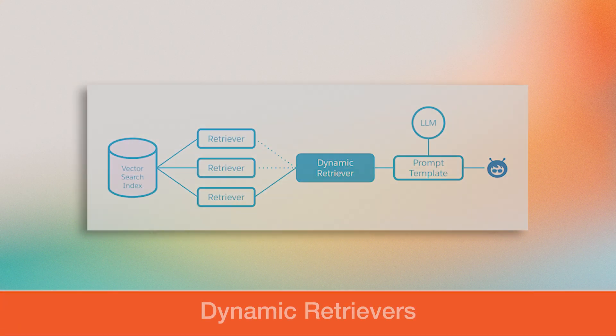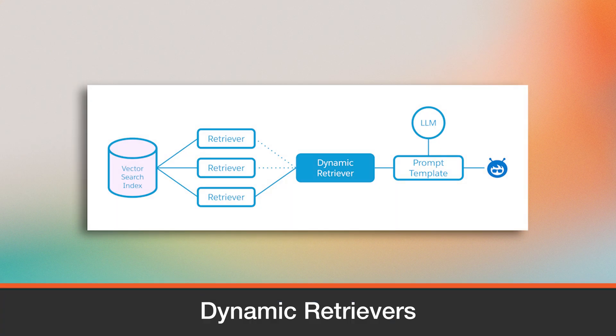You can also create dynamic retrievers, which use runtime placeholders populated based on user input or contextual variables. These retrievers adjust their query parameters dynamically at execution time, making them ideal for personalized interactions. For example, a dynamic retriever might use a customer's current product subscription or region to tailor search results in real-time.